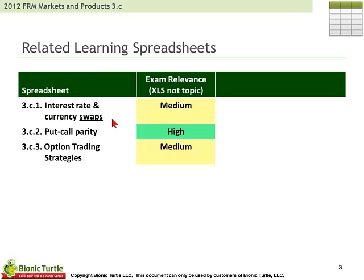Each of those gets to the same answer from two perspectives: first treating the interest rate as a bond or as two bonds, and then as a series of forward rates.